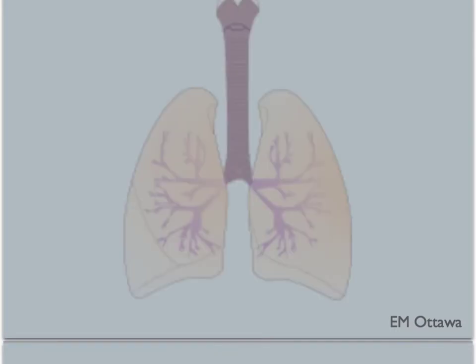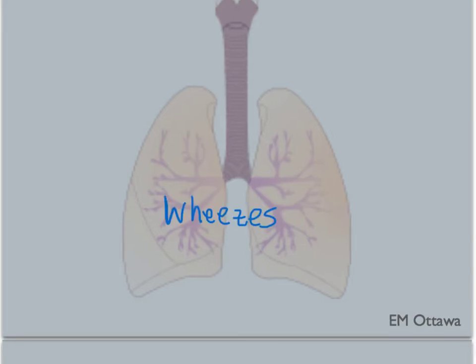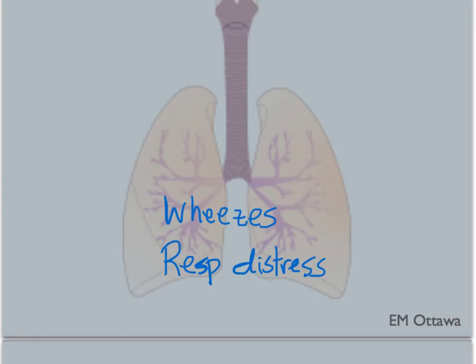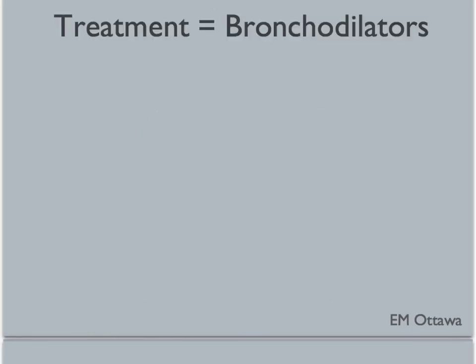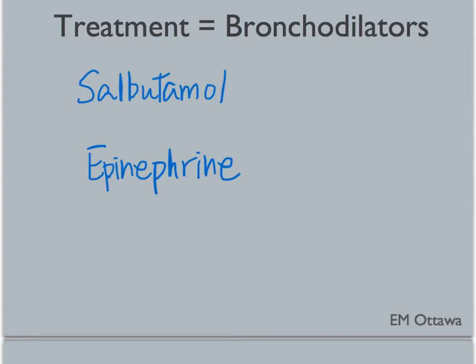Next, breathing. Remember how the mediators cause mucus production and bronchoconstriction? It may sound something like this. You may also see signs of respiratory distress, such as in-drawing, tracheal tugging, abdominal breathing, or tripod posture. How do we treat this? Just like an asthma attack — we give salbutamol for bronchodilation. If you have used epinephrine, it will also bronchodilate the patient. Patients also receive oxygen if they are hypoxic.